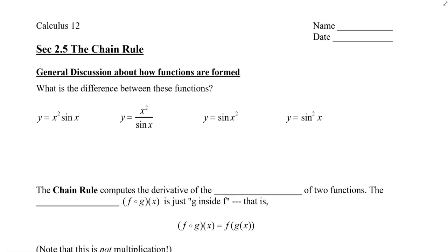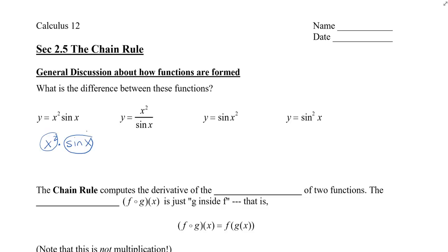Let's take a look at these four functions. What do you notice is the difference between these four? Some of you might think that the first two have two x's, whereas the latter two only have one. Well, that's part of it. If we take a look at how the functions are formed, we can see that x squared is multiplied by sine x in the first one, so we actually have two functions. In the second one, we have x squared divided by sine x — again, two functions.